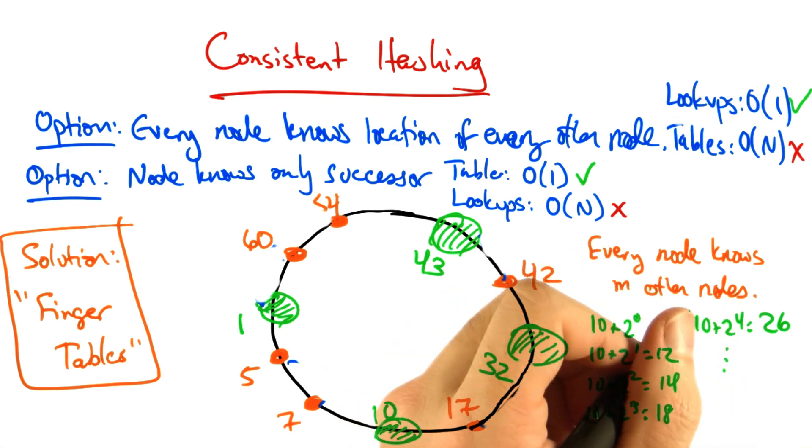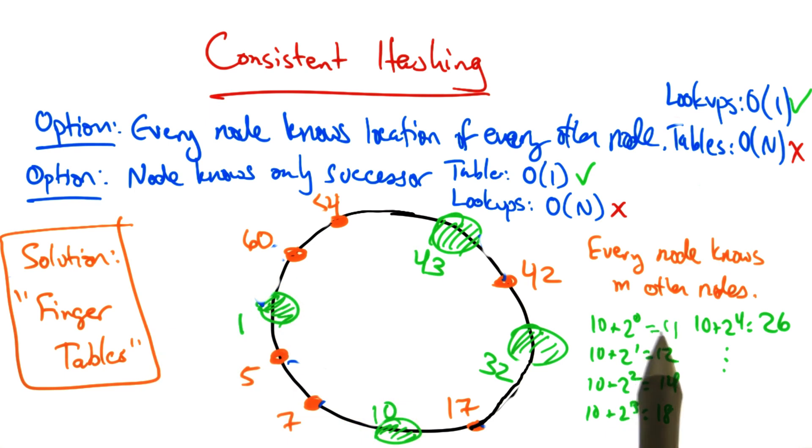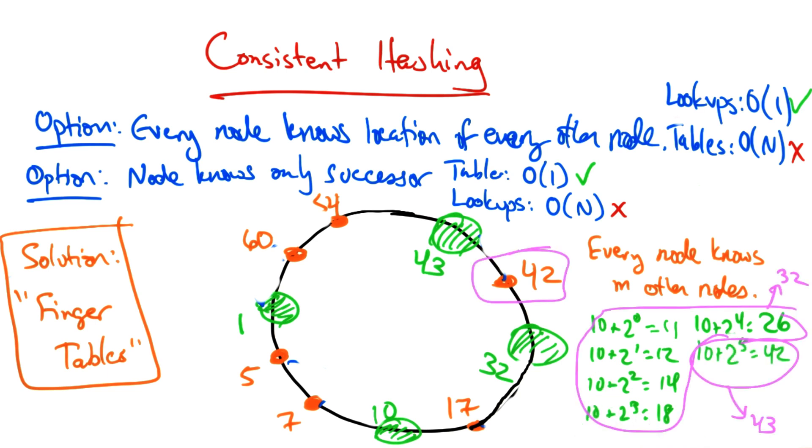Where finger i points to the successor of n plus 2^i. So finger 0 would point to the successor of 11, which is 32. Finger 1 would also point to 32, and so forth. Finger 5 would point to 43.